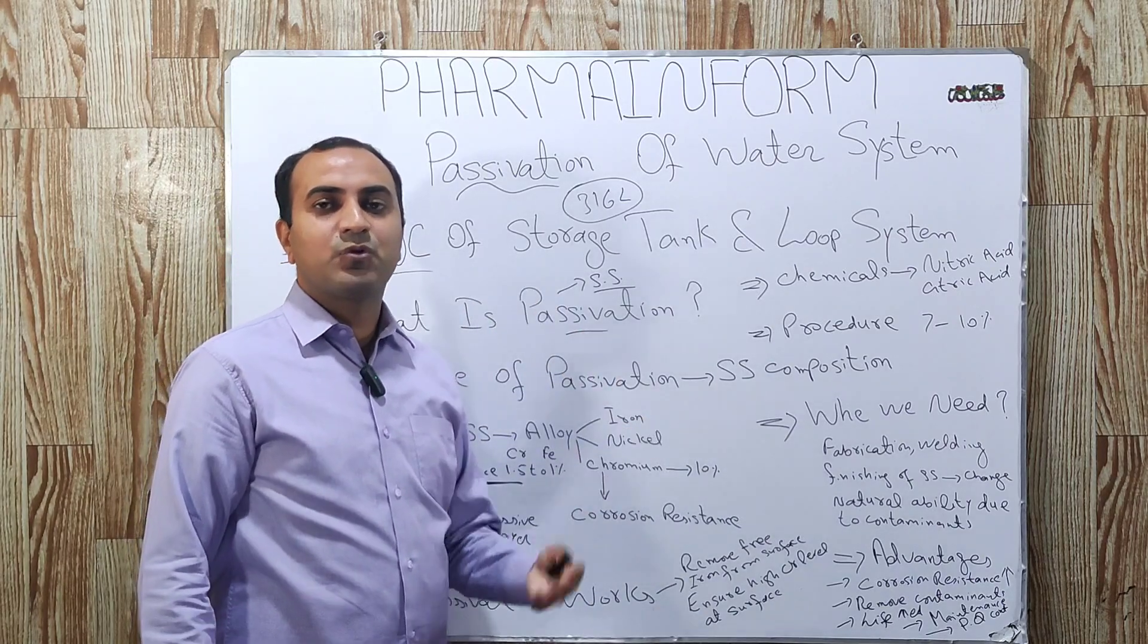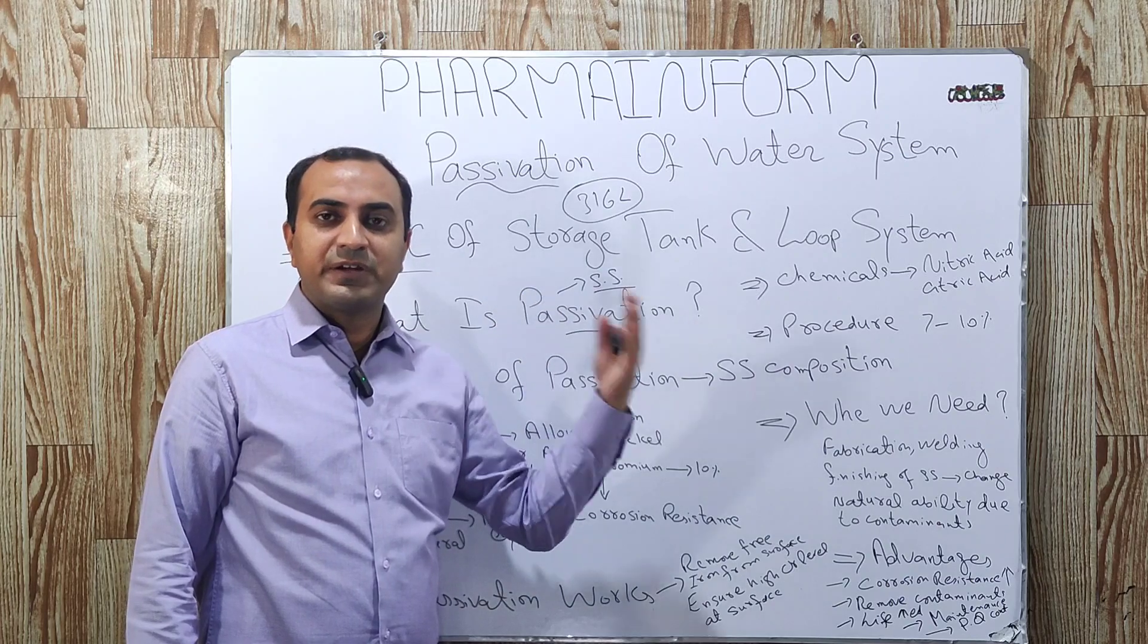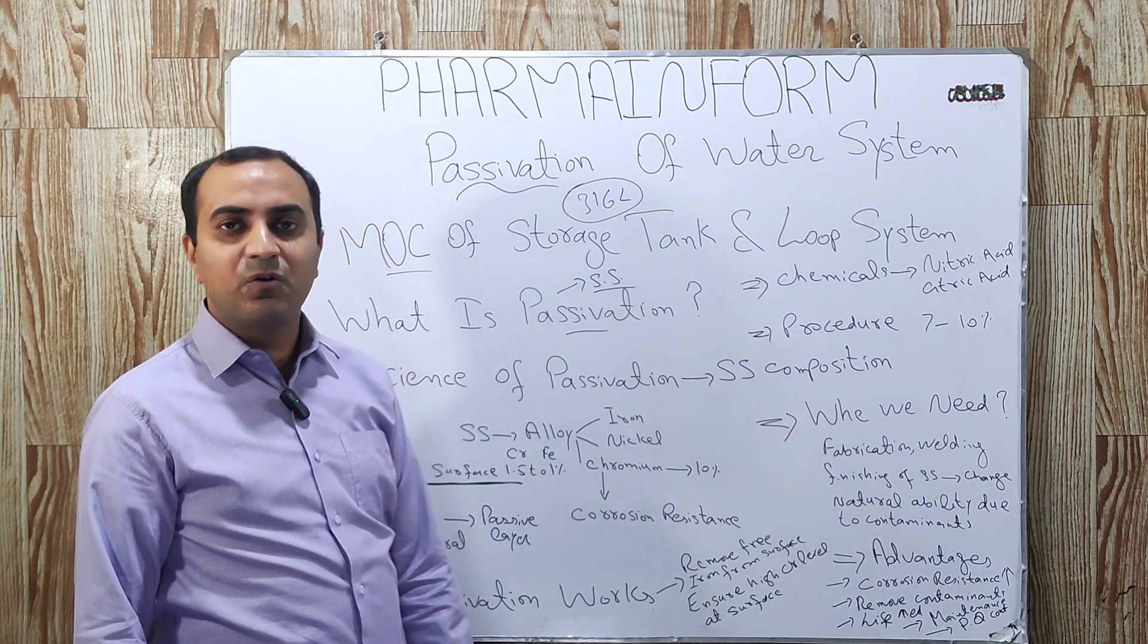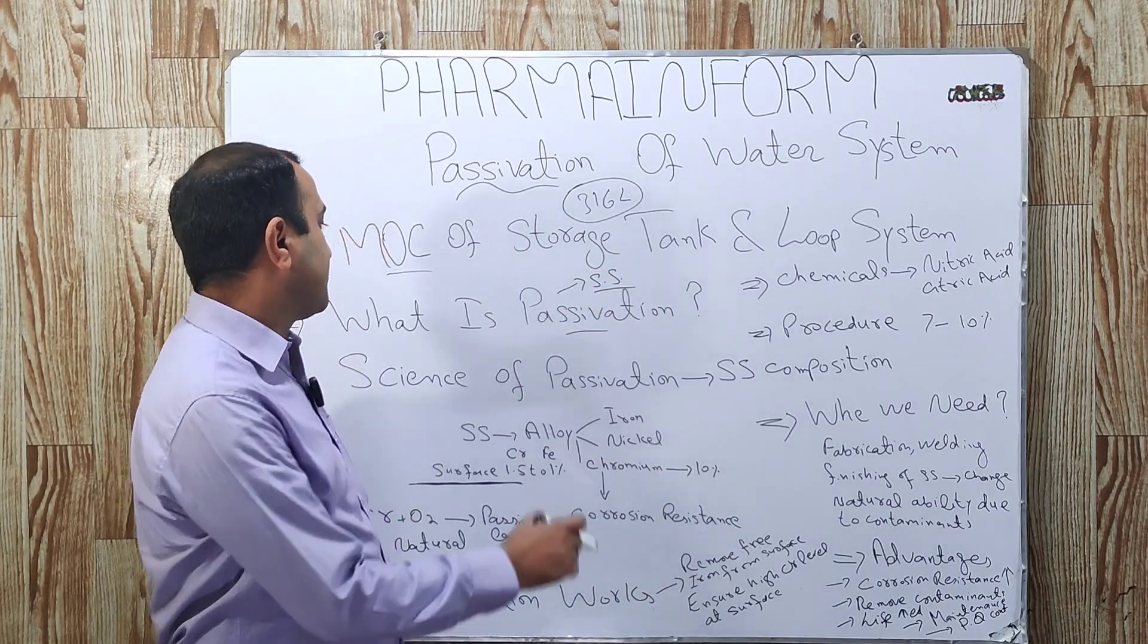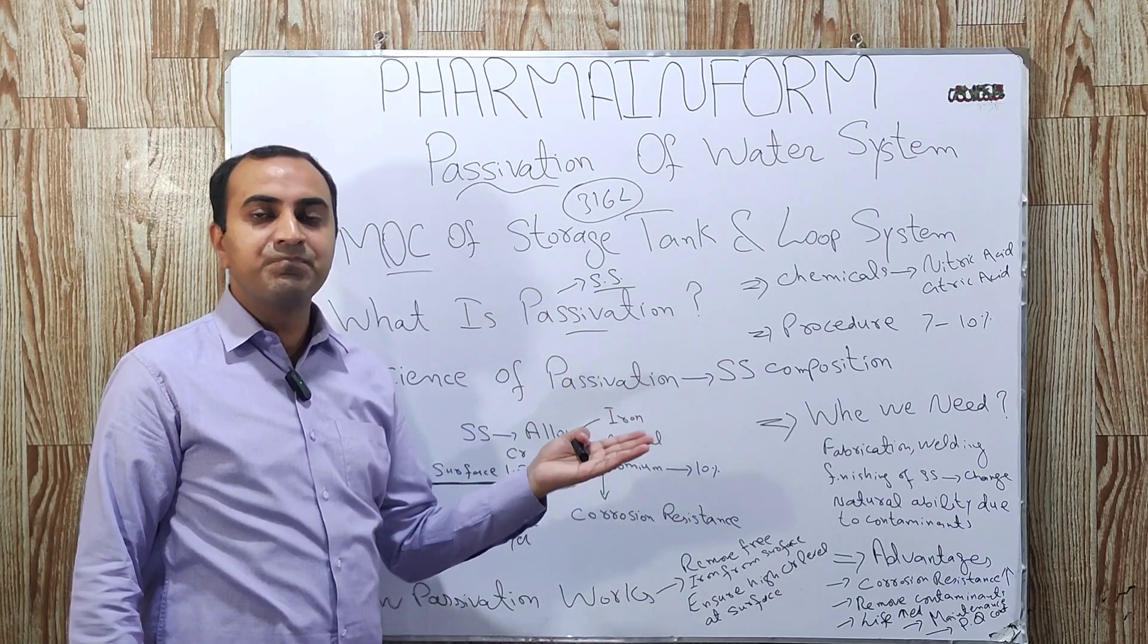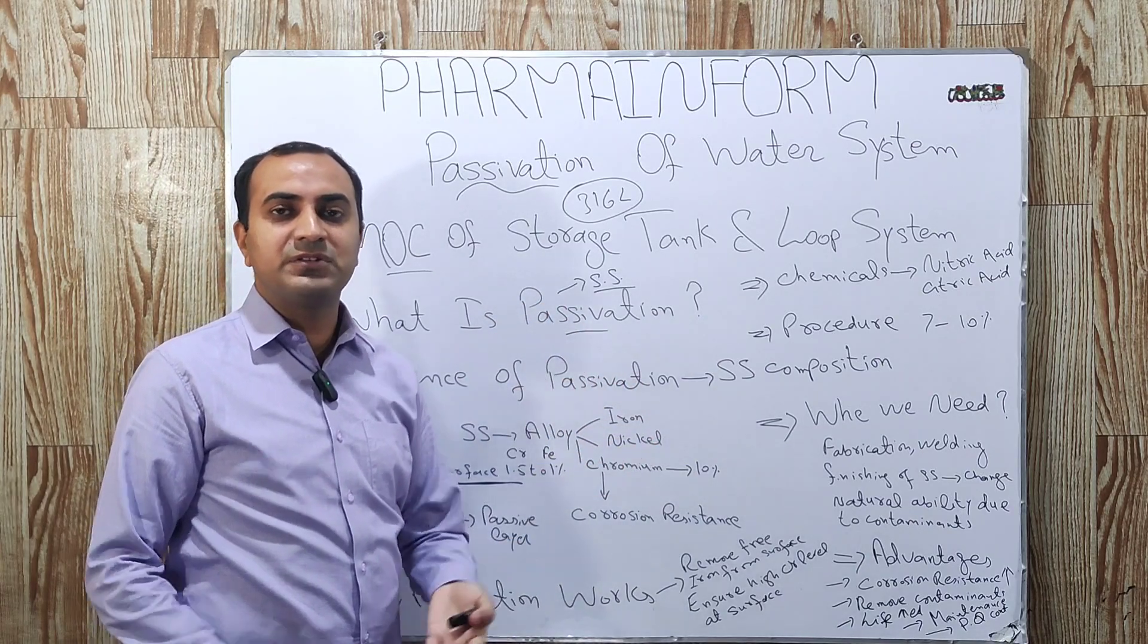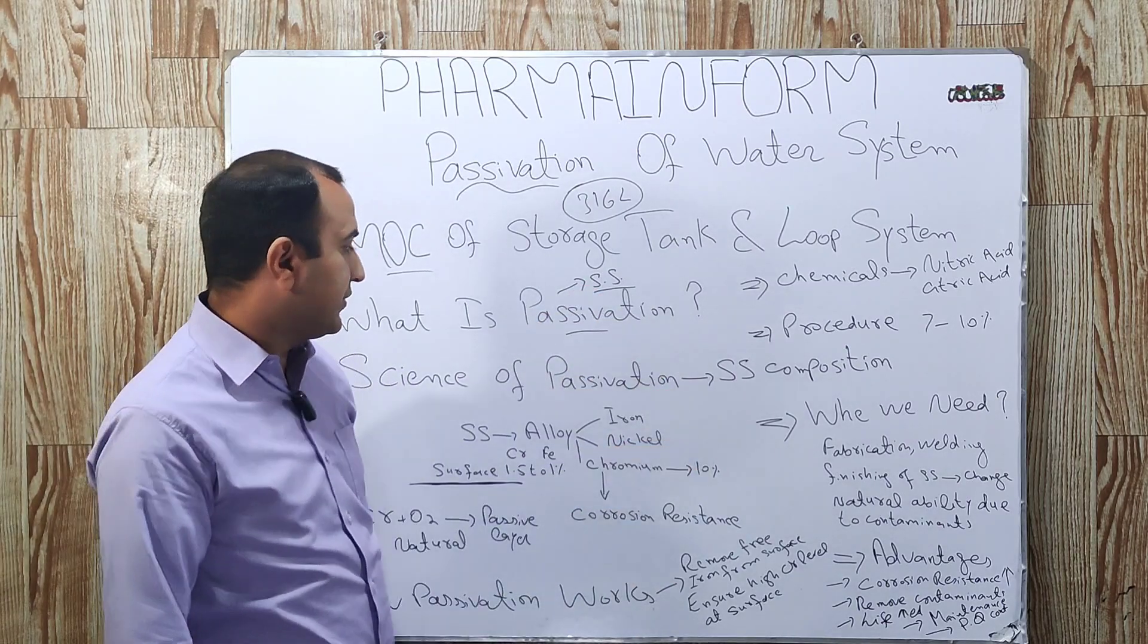In water system, we have storage vessels and loop circulation system made of stainless steel. Any other transfer lines used for the transferring of bulk liquid may also be treated with the passivation. So, what is passivation? Passivation is a chemical process which is used for stainless steel where excess or stainless steel is treated with special chemicals to enhance its corrosion resistance.